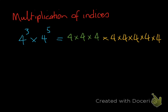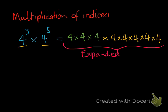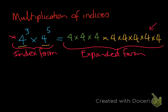Now we've got 4 to the power of 3 and 4 to the power of 5 in expanded form. This is what we call expanded form, and this is what we call index form. When we express something in index form we write it as a base with a power, and in expanded form we write it fully multiplied out. It's just two different ways of writing the same thing.